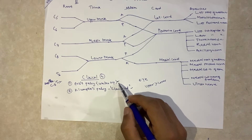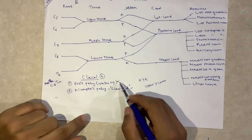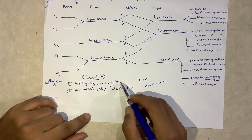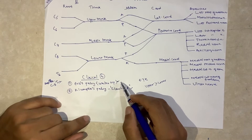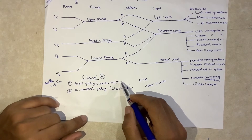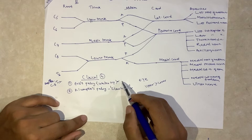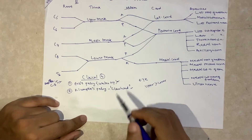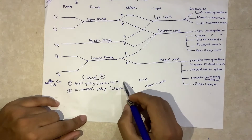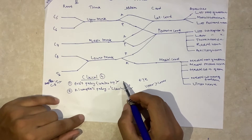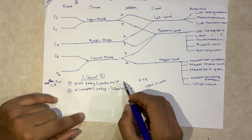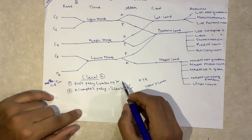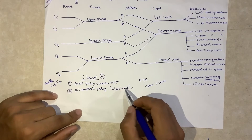Injury in the upper trunk causing Erb's palsy is mainly due to lateral traction of the neck during delivery. During vaginal delivery, if there is an increase in the angle between the neck and shoulder while delivering the baby, it may result in injury to the upper trunk.